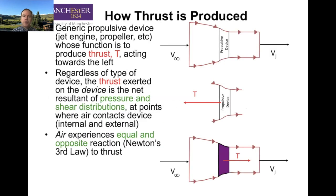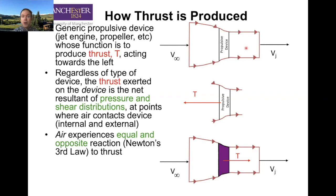So how is thrust produced? In general, we produce thrust by changing the momentum of air or mass going in versus coming out. We have a side-closed control volume with open ends. In a rocket, one open end is a reservoir of all propellants. The key is we take a mass flow in at a given velocity and a mass flow out at a given velocity. Those mass flows may or may not be the same. It's that change in momentum that gives us a resulting force on our thrust device and on the fluid.